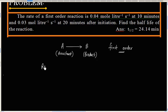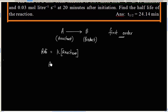For first order reaction, we can write rate is equal to k times concentration of reactant. And in this case, reactant is A. So k times concentration of A.